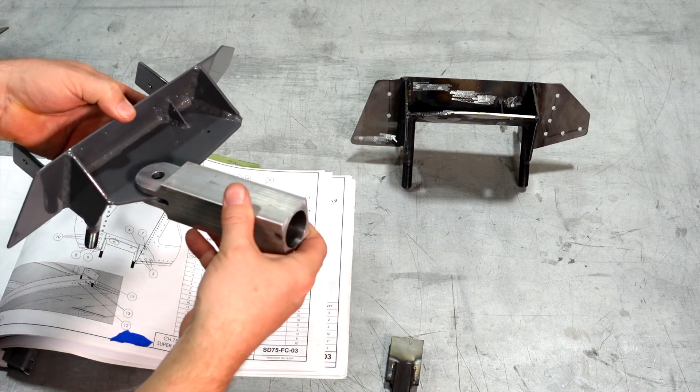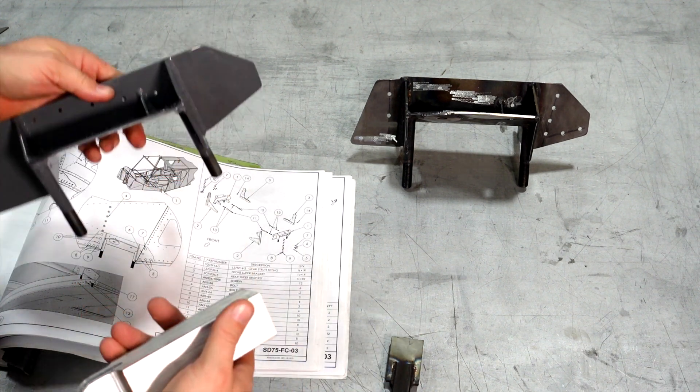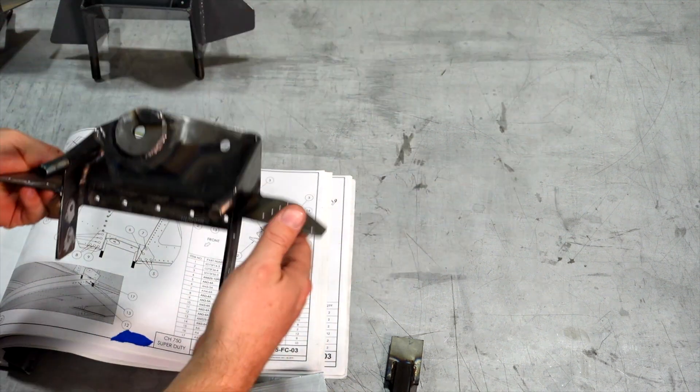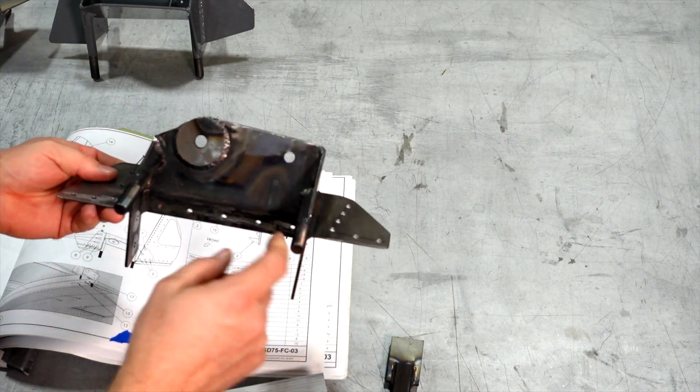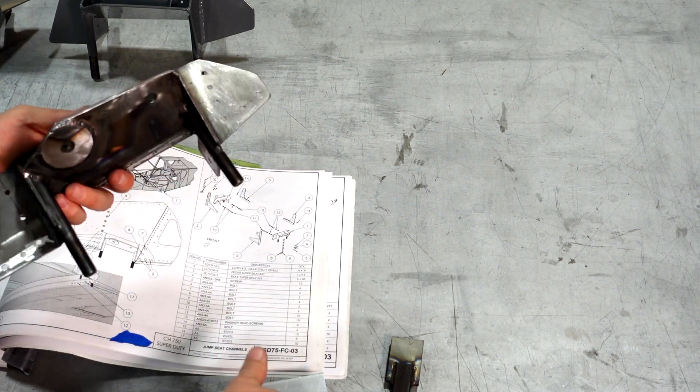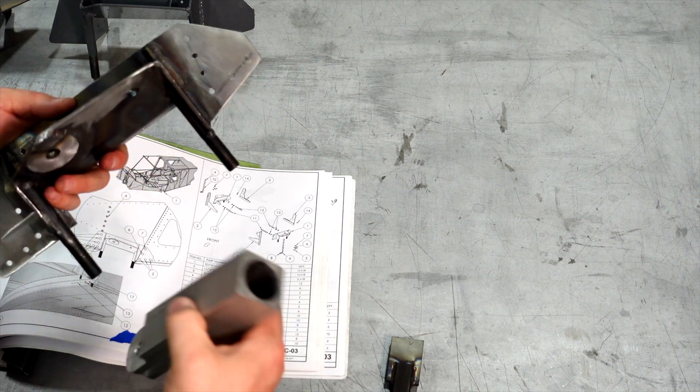And sure, you could have maybe put a washer or something in here, but why isn't it done correctly? So reached out to Zenith, got a brand new set, and that's what I've been working on this week. Just got all the holes done, prepped, smoothed out as best I can.